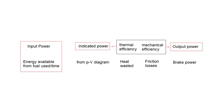In between the input and output, how we actually get to the output power: from the PV diagram we find what we call the indicated power, then you've got thermal efficiency, and then mechanical efficiency. The overall efficiency is your output divided by your input — that's a summary of this video — and we're going to look at each of these bits individually and then come back to this slide.